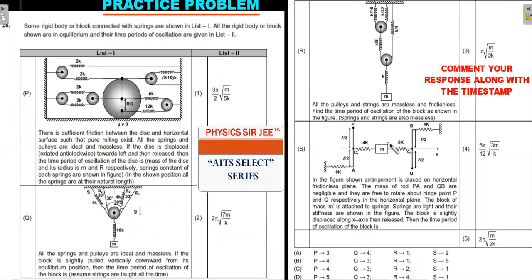The practice problem is from a past AIT paper — a list-matching type question familiar to JEE aspirants. List 1 has four sections P, Q, R, S; List 2 has answers 1 through 4. Treat it as four separate practice problems, each with its own answer. For each one, determine whether you can apply the effective spring method or not. For those where you can't, comment below with the timestamp and the method you used or the answer you got, and I'll respond. I'll also answer this question in the Physics Sergi AIT Select series.